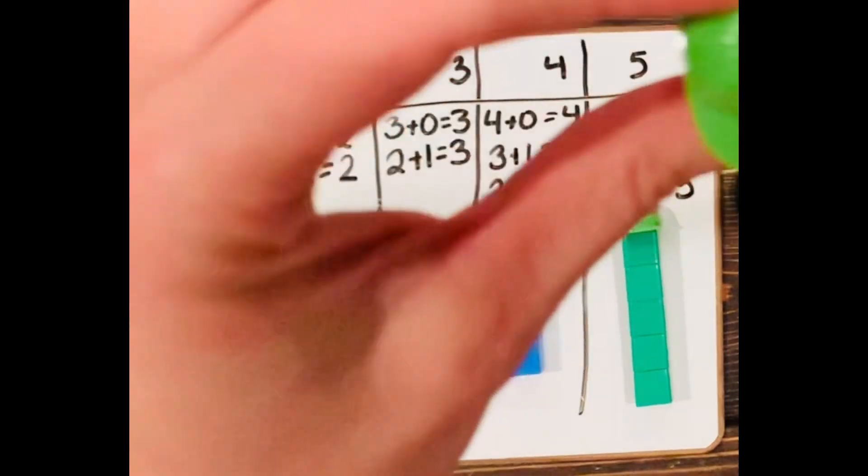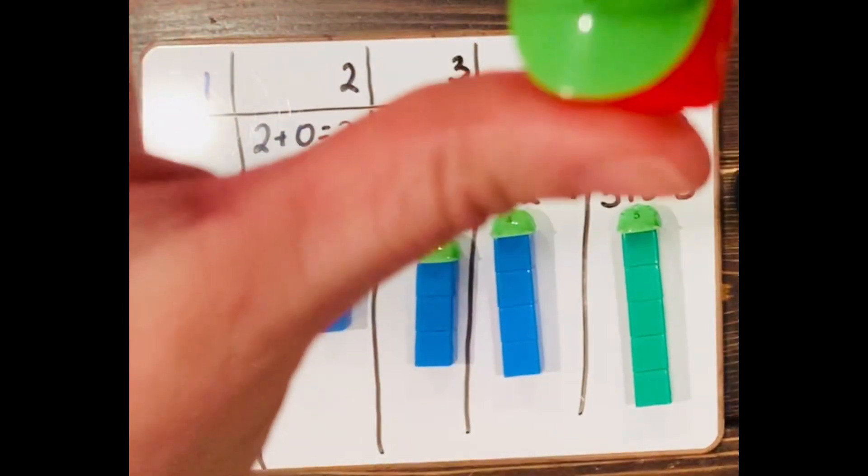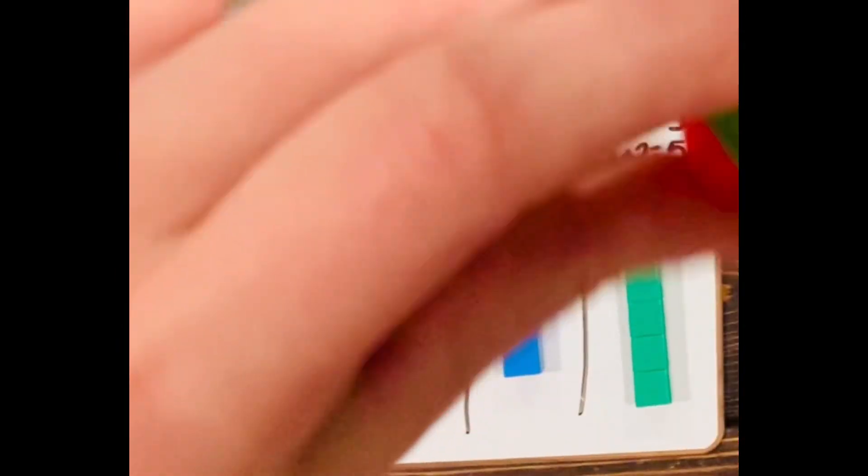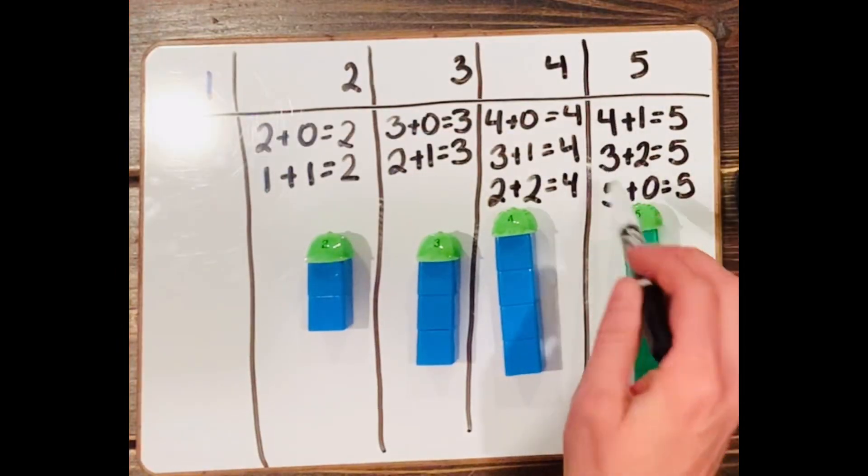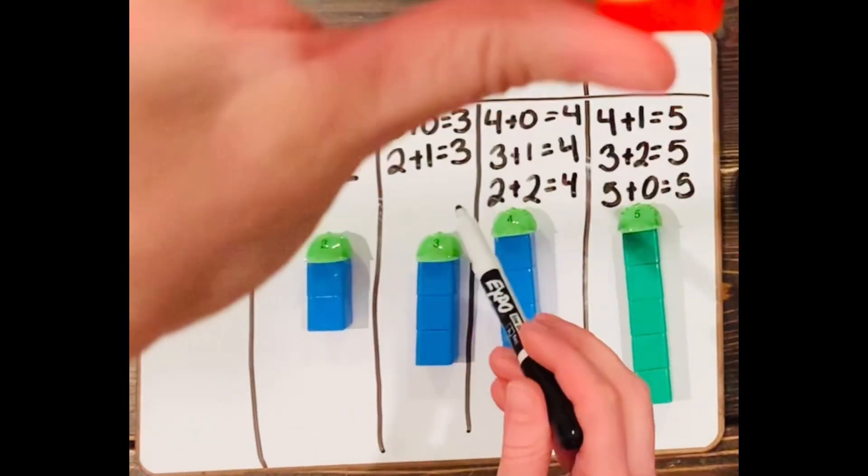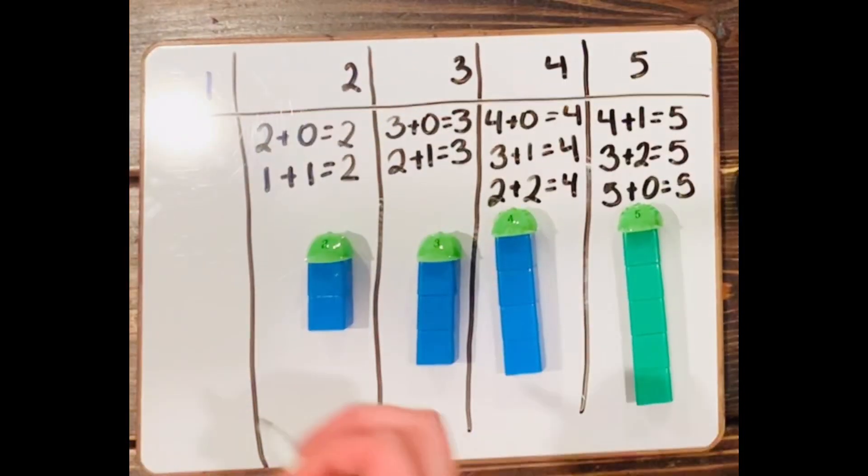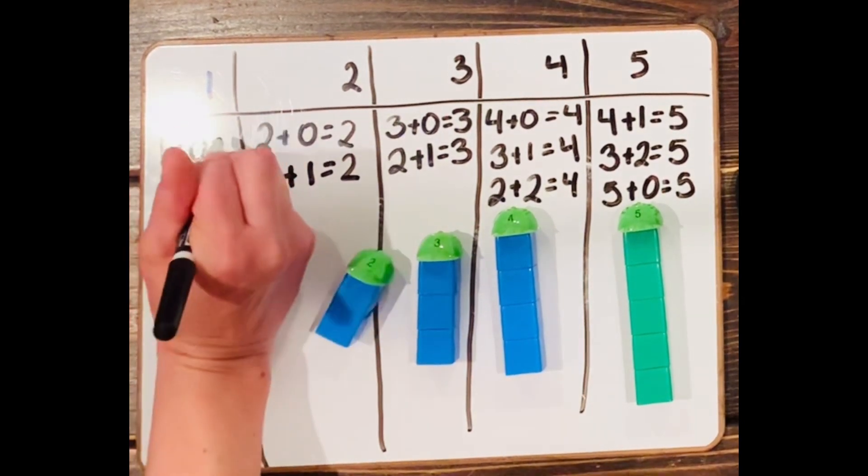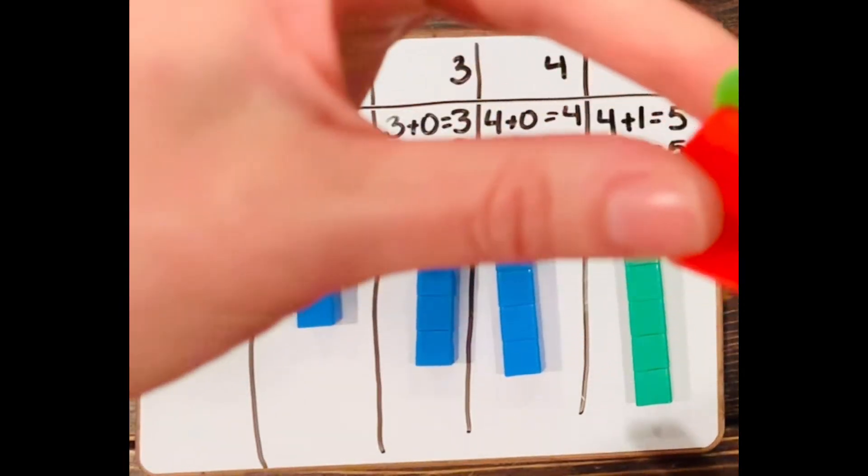And then I have my little baby, my little one. And he doesn't have anything to break off, right? Because he's a small number. So as we get bigger with our numbers, we could make more addition sentences. But with little numbers, we can't make as many. So all I can do with number one is do one and zero. Because all there is is one.